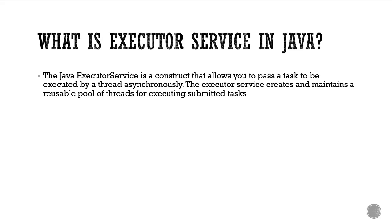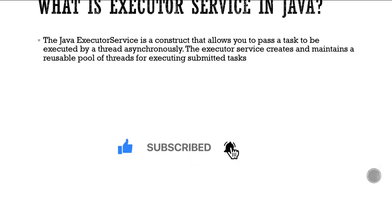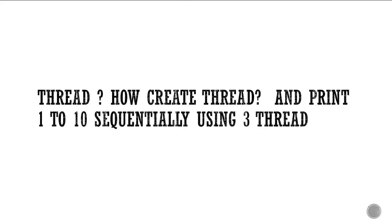Next question: How to create a thread and print 1 to 10 sequentially using three threads? Basically, printing numbers from 1 to 10 sequentially using three threads requires using notify and wait methods. As for how to create a thread, there are different ways — implementing Runnable, extending the Thread class, or using Executor frameworks.